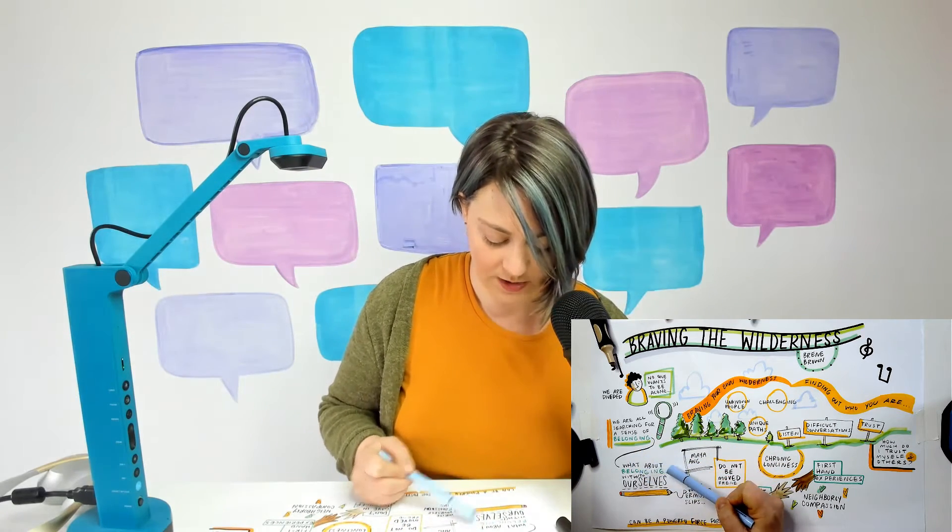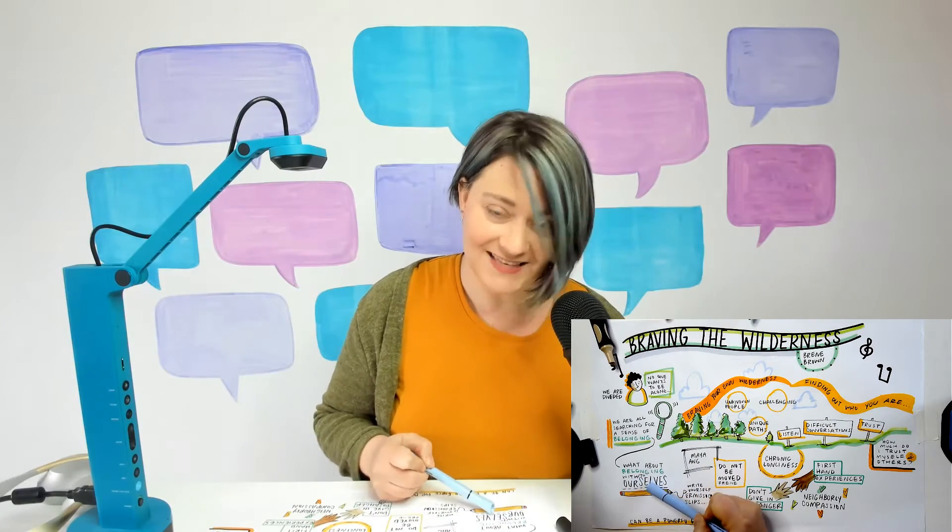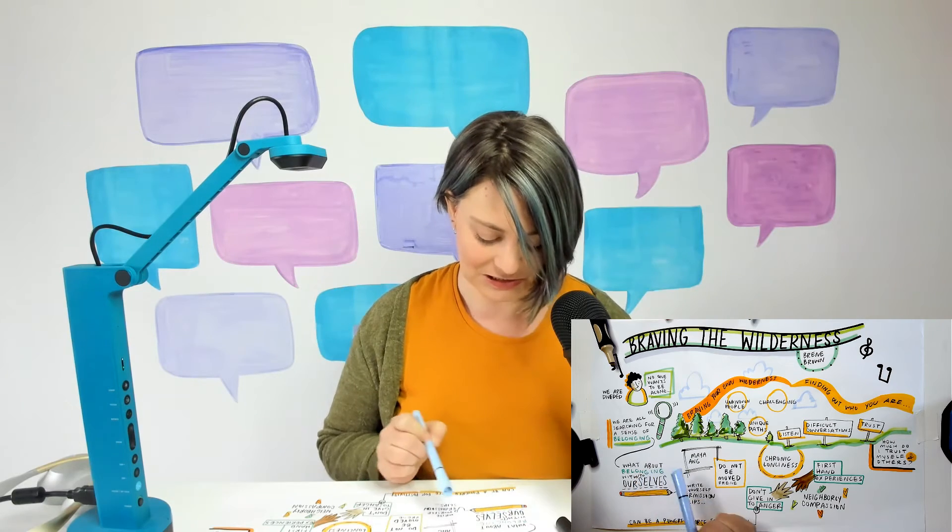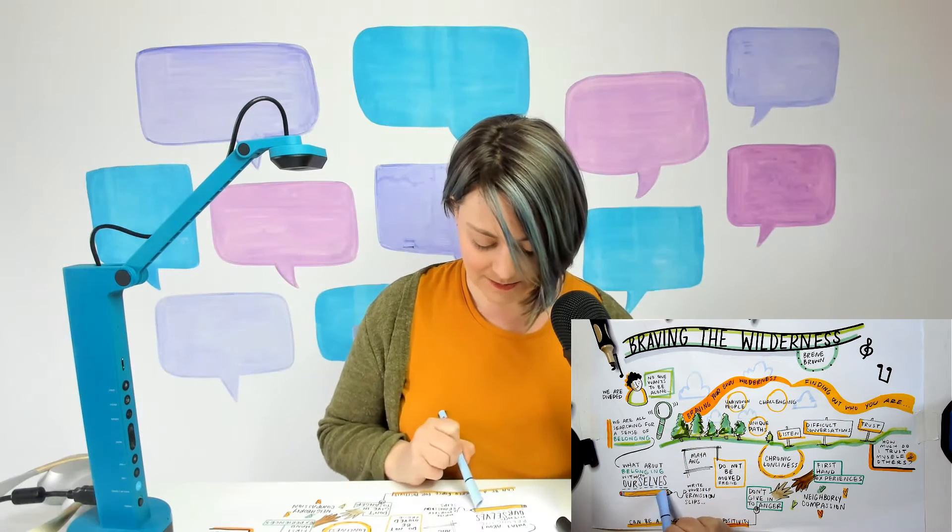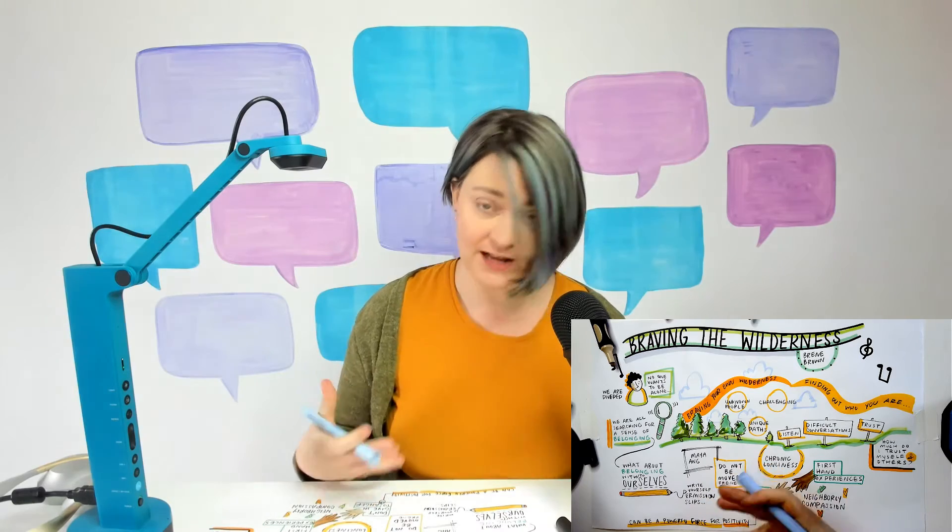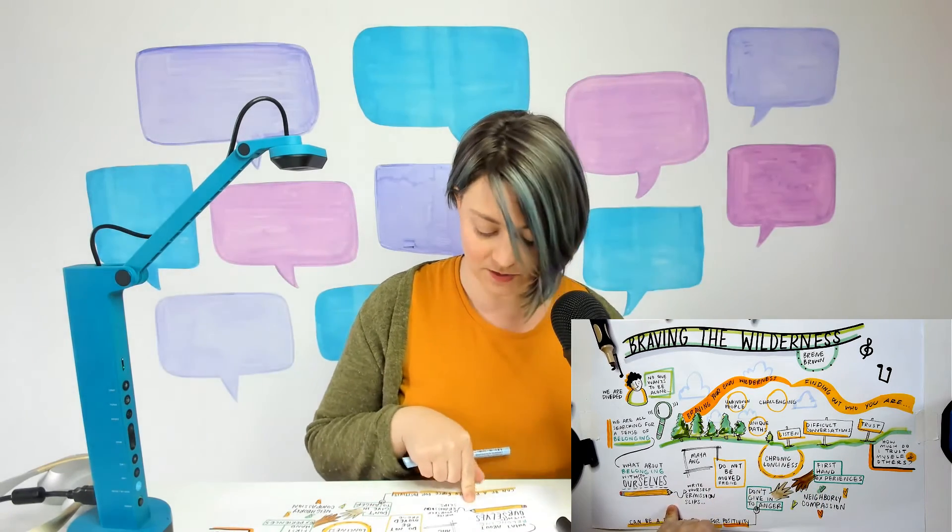So what about belonging? I wrote with ourselves, but then they were saying more to ourselves. So I put a little slash, I snuck a little slash too in there and I did some lines. But then she talked about this idea of writing yourself permission slips. So I turned those lines into a pencil.